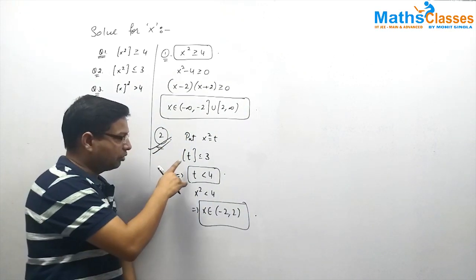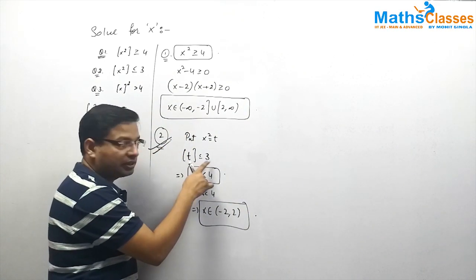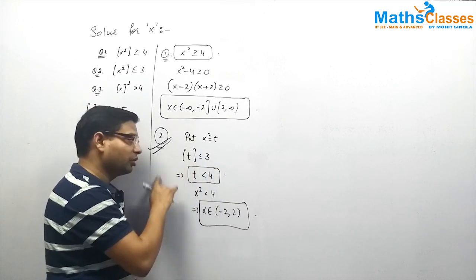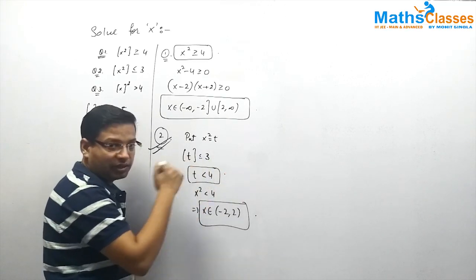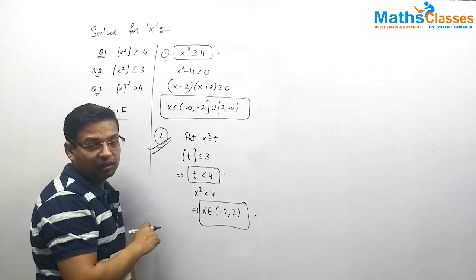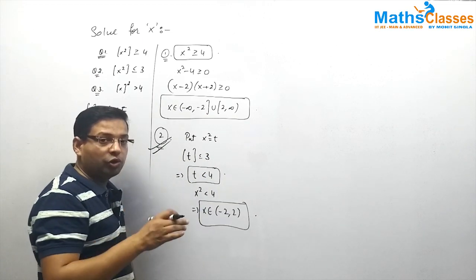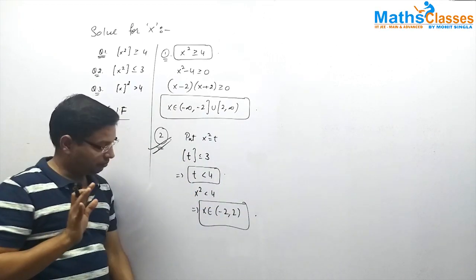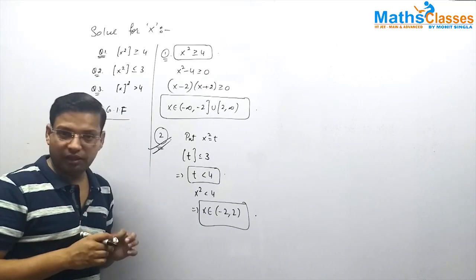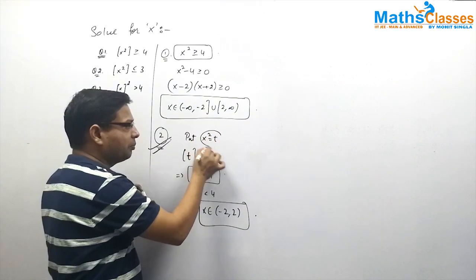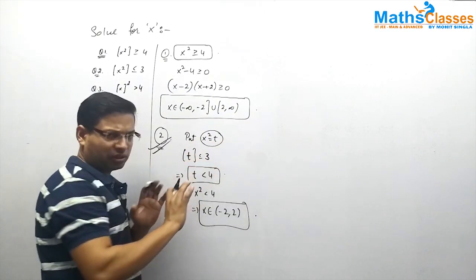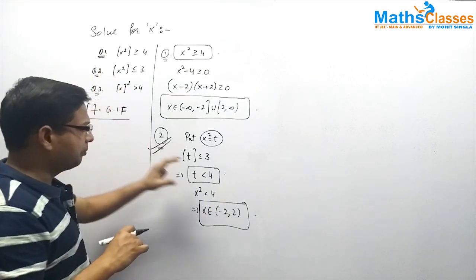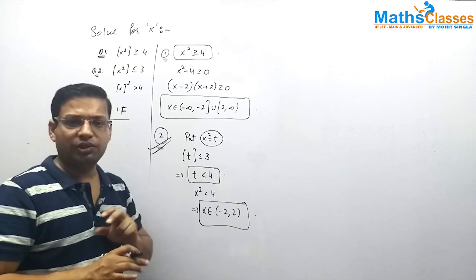The output is 3 or less than 3 when the input is less than 4, because if the input is 4 or greater, the output will be 4 or greater. Note that substituting t = x² was not strictly necessary — you could work directly with x² inside; it works the same way.